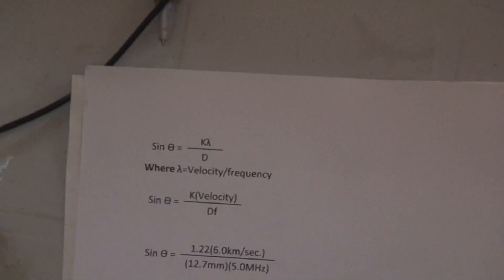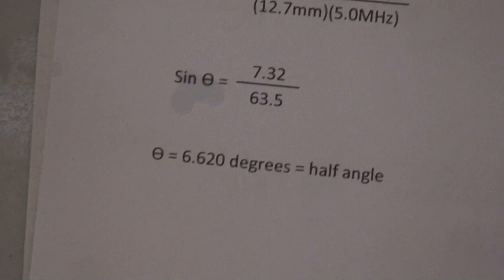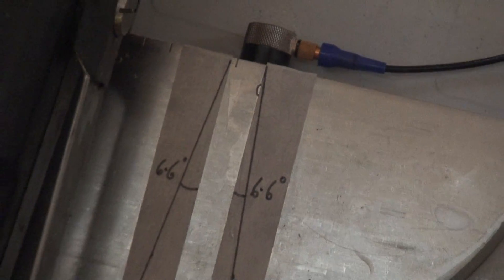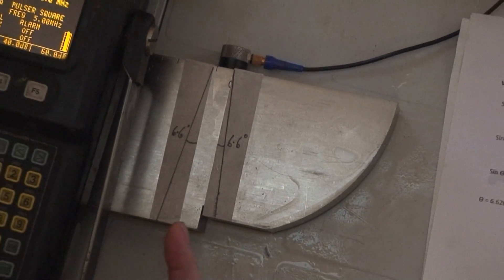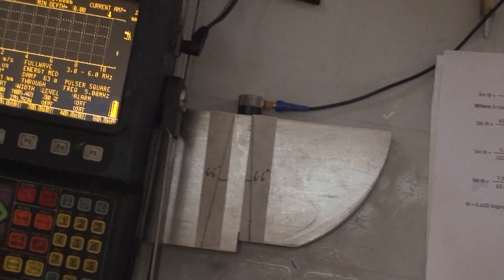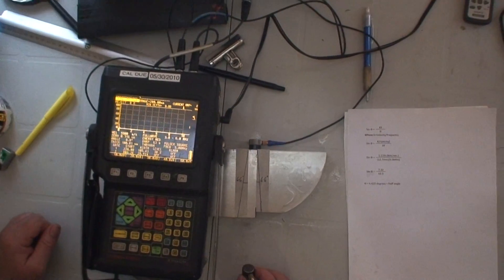I have marked this IIW V1 with 6.5 degrees either side, the number of degrees that a half-angle beam spread depicts for a 5 MHz probe.